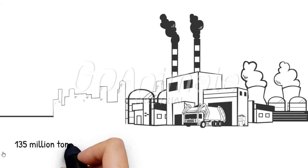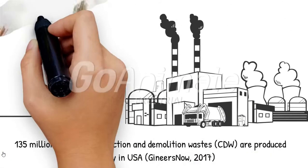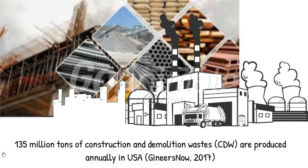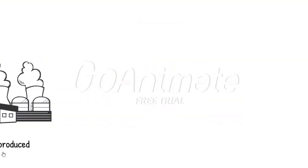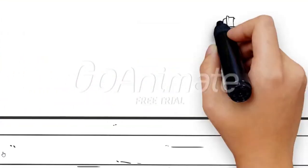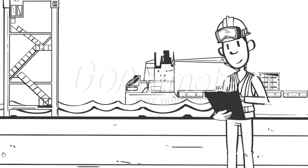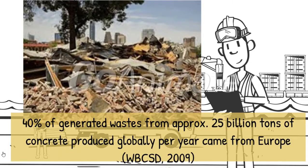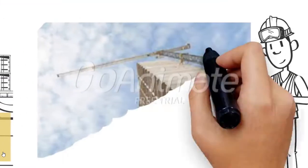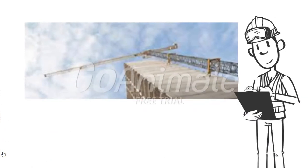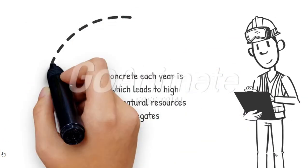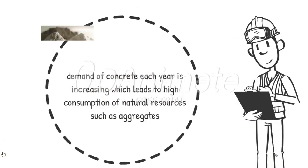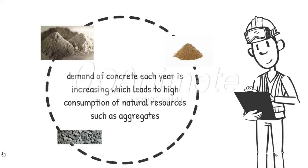135 million tons of construction and demolition wastes, or CDW, are produced annually in the USA. 40% of generated wastes come from approximately 25 billion tons of concrete produced globally per year, largely from Europe. The demand for concrete each year is increasing, which leads to high consumption of natural resources such as aggregates, cement, sand, and gravel.